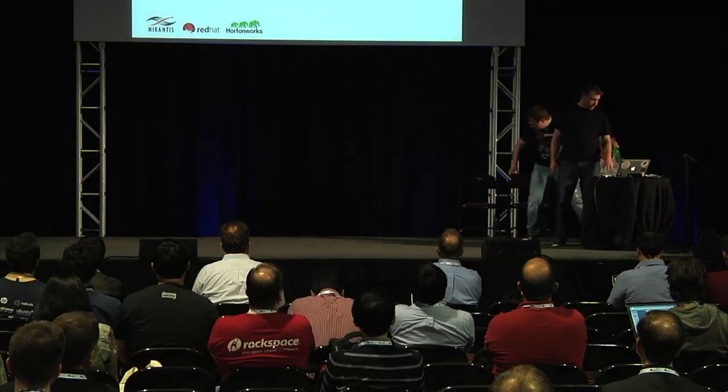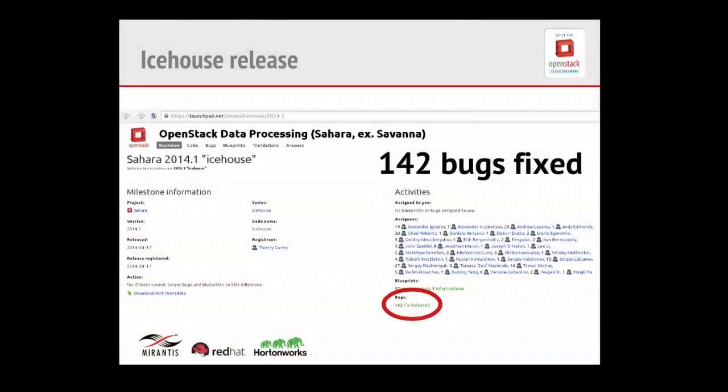I'm Matt, and I'll talk about specifics of the Icehouse release of Sahara. This is actually the fourth release of the project, the first release where it was called Sahara, and the first release where it was incubating with OpenStack. Through four releases we've seen nice growth in participation. In this release we had 142 bugs resolved, which represents strong growth, and we saw a tremendous amount of blueprints and new features added.